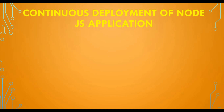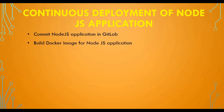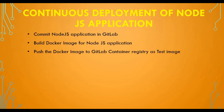Let's discuss each individual step in our continuous deployment pipeline. First, we will have a Node.js application in our GitLab repository. We'll build the Docker image and push it to the GitLab container registry — we will mark this image as a test image, not the actual release image. Then we will run a test on the Node.js application using this test image.